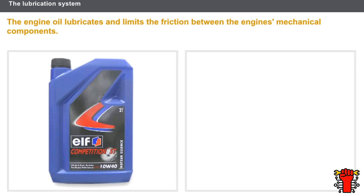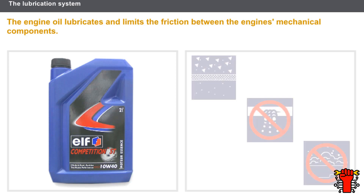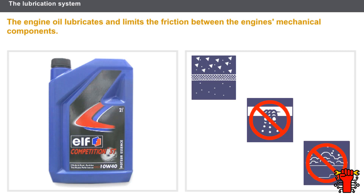The engine oil lubricates and limits the friction between the engine's mechanical components. The oil needs to have the following properties according to specific standards: it evacuates metal particles in suspension, prevents deposits forming, and will not turn to mousse.